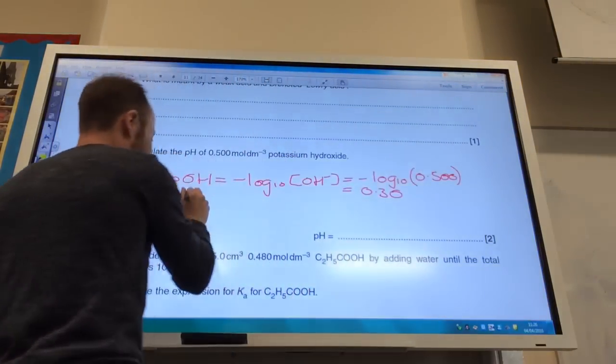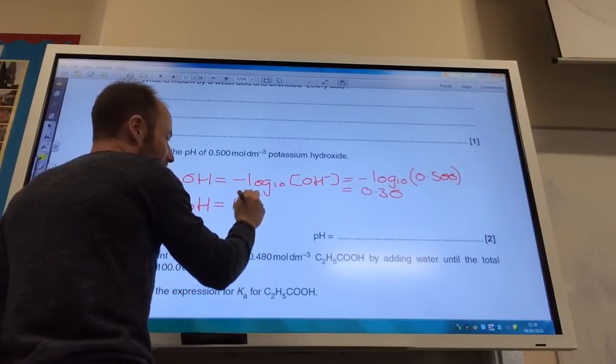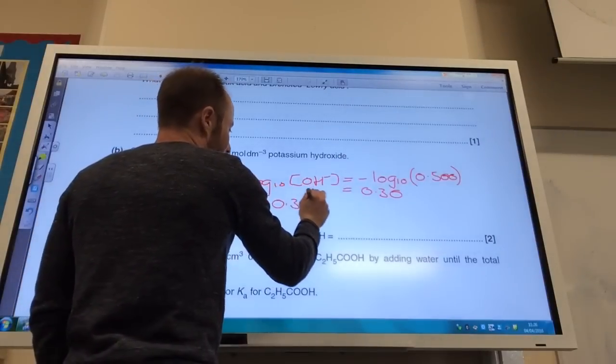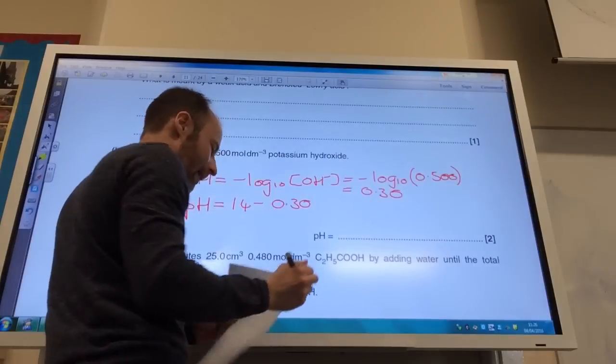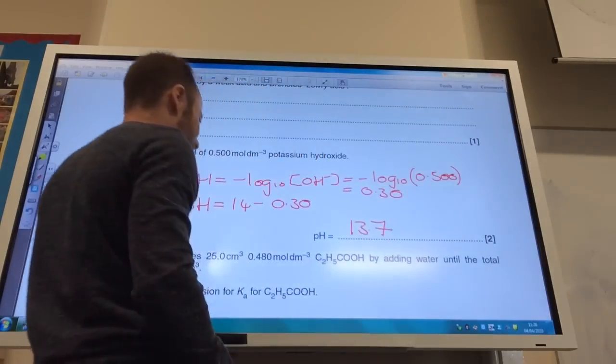And then the pH is just 14 minus the pOH, which is 0.30. And therefore your pH is 13.7.